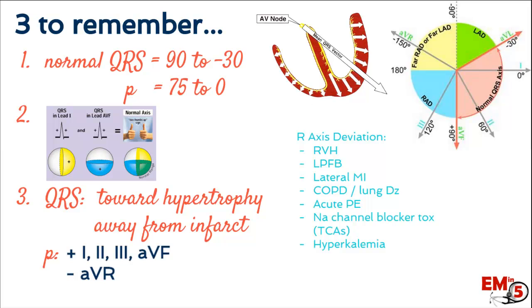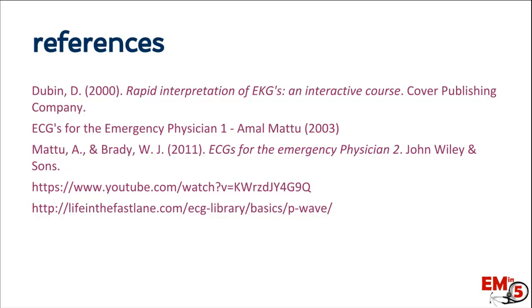For your P wave, make sure it's positive in leads 1, 2, 3, and AVF, and negative in AVR. If you don't see that, that means an ectopic atrial pacemaker. Here are some references — thanks for joining us on EM in 5.